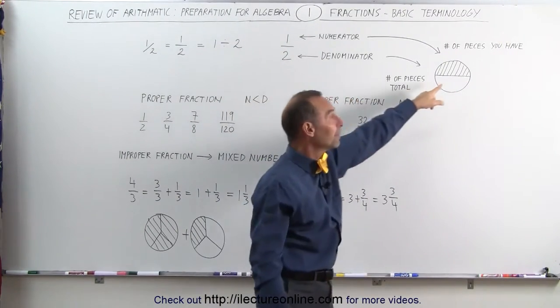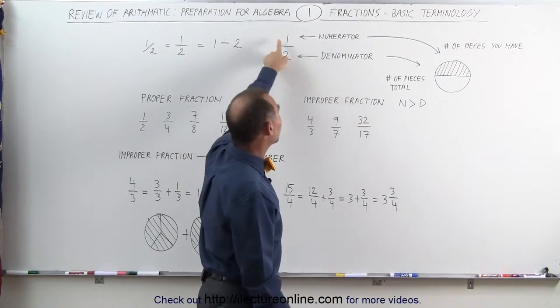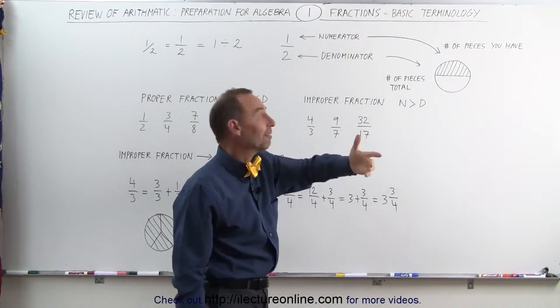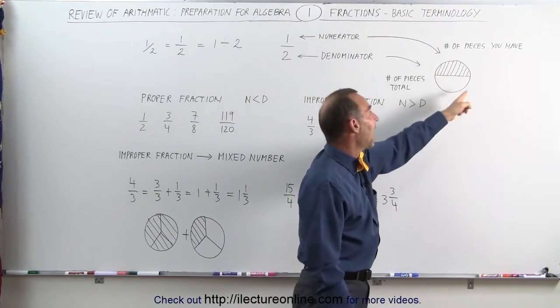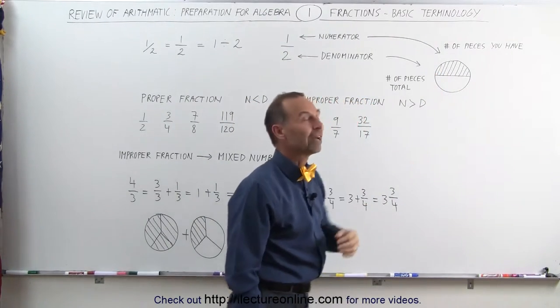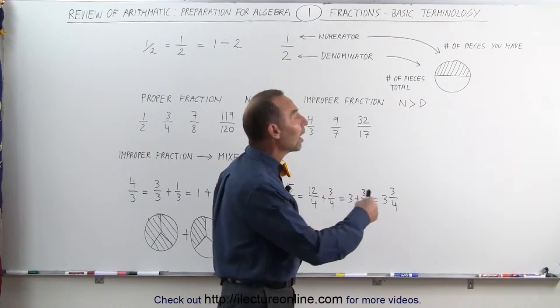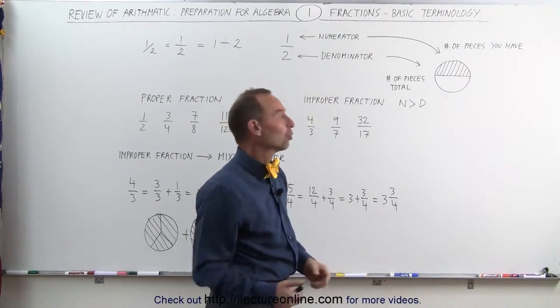If it's 3, you divide it by 3 pieces. The number at the top tells you how many of those pieces you have. In this case, you have 1 of the 2 pieces, so you have half or 1 divided by 2 or 1 out of 2 pieces. And that's what a fraction really is.